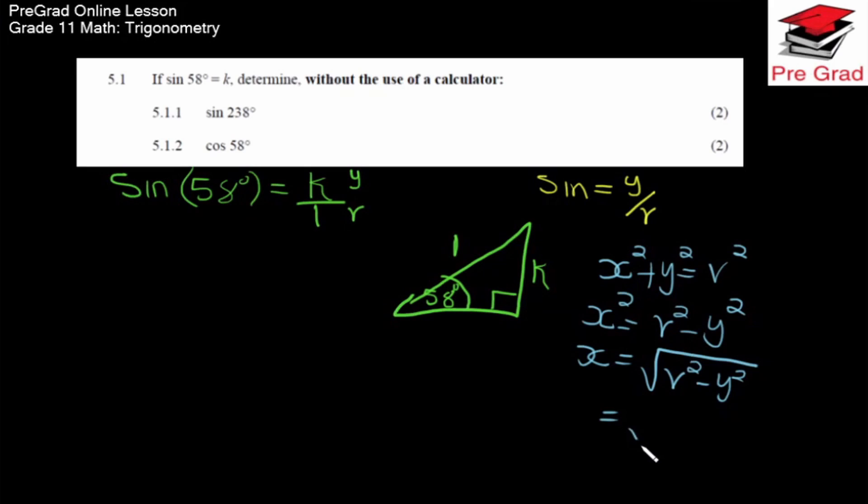And the value of r squared is 1 minus y squared. The value of y is k, so y squared is k squared. So the value of the adjacent x is the square root of 1 minus k squared.